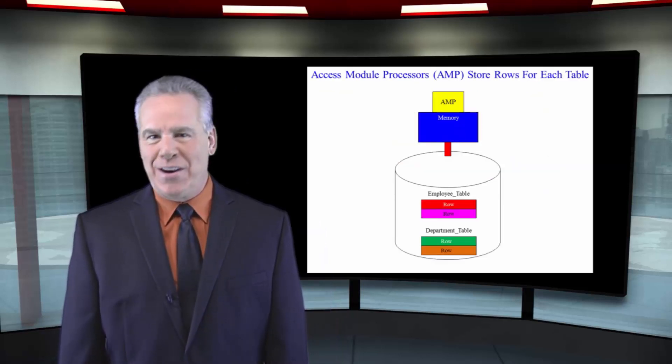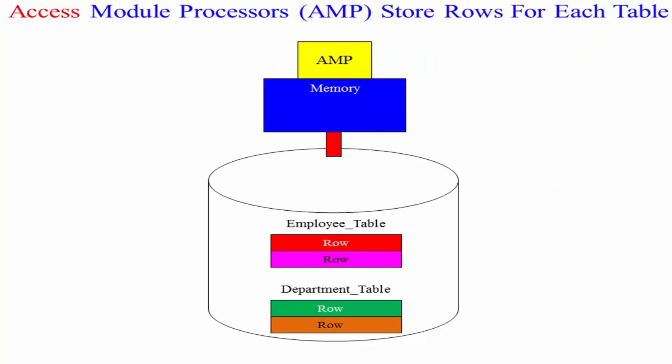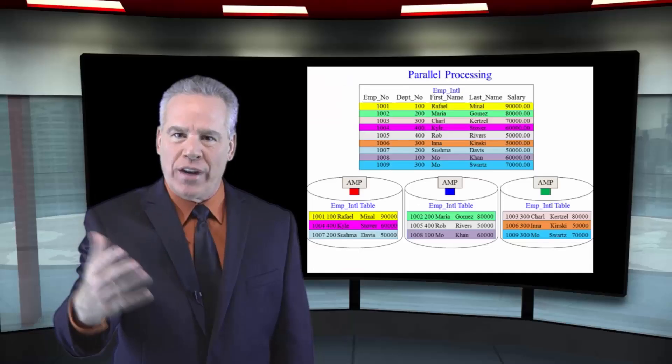Here's your first Teradata term, AMP, Access Module Processor. These are a series of parallel processing processes. And they are called AMPs.